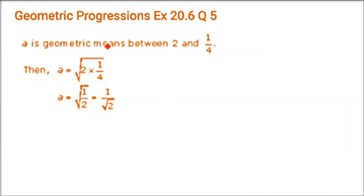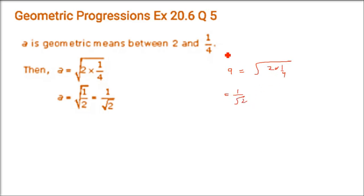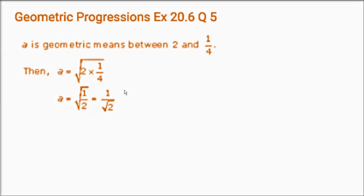If a is the GM of 2 and 1/4, find a. Simply take a = √(2 × 1/4) = √(1/2) = 1/√2.